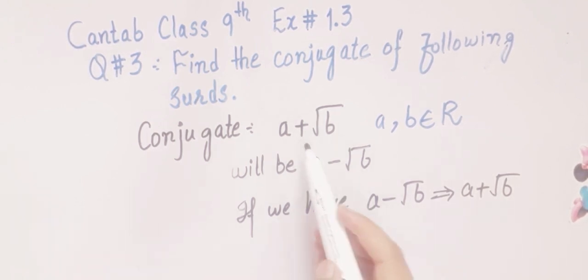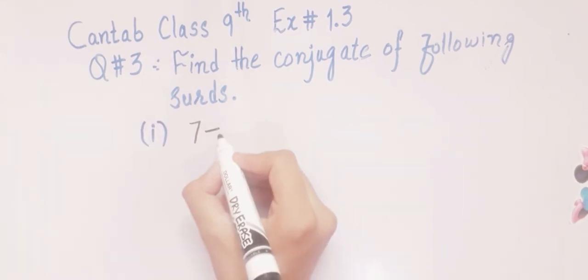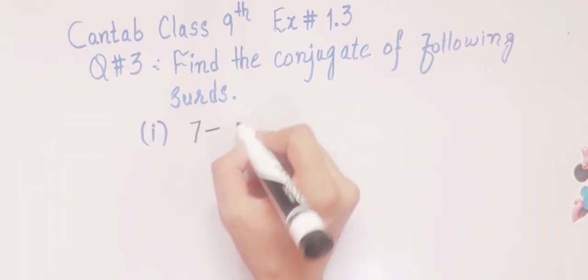You have noticed that we only change the sign of addition into subtraction before the square root. Minus will be converted into plus before the square root. This is the easy concept of conjugate - you only have to change the sign before the square root. So you can easily find out the conjugates. Part one is 7 minus square root 6.